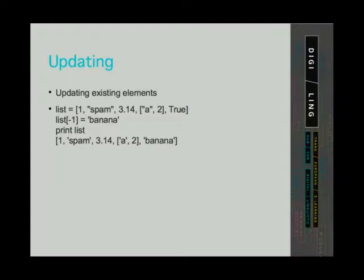Since lists are mutable data types, we can update them. That is, we can change existing elements. To do that, first we have to address an element by indexing it. Then we assign to this addressed element a new value. As in the example on the slide, we have updated the last element, which was a boolean value, to a new string element.